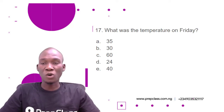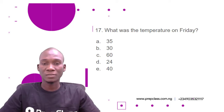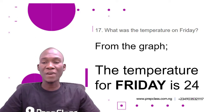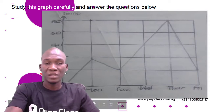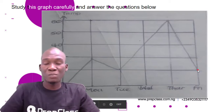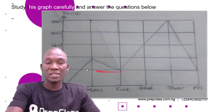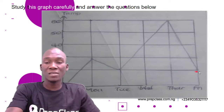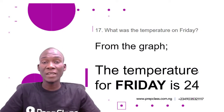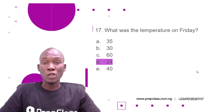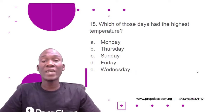Next question: What was the temperature on Friday? Options: A) 35, B) 30, C) 60, D) 24, E) 40. From the graph the temperature for Friday is 20, but because there is no option of 20, we pick the closest value, which is 24. So the answer is 24 and the correct option is D, 24.